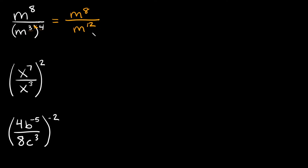The top and the bottom are both as simplified as we can get them, so now we can combine them. To divide exponents, we have the same base m on top and bottom, so we just keep the m and subtract the exponents — the top one goes first. So that's 8 minus 12, which equals negative 4, giving us m to the negative fourth power.